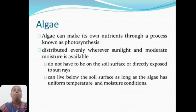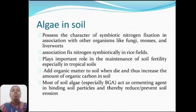Algae can make their own nutrition through a process known as photosynthesis and are distributed evenly wherever sunlight and moderate moisture are available. They do not have to be on the soil surface or directly exposed to sun rays, and can live below the soil surface as long as uniform temperature and moisture conditions are present. Algae in soil possess the character of symbiotic nitrogen fixation in association with other organisms like fungi. Most soil algae act as a cementing agent in binding soil particles and thereby reduce or prevent soil erosion.